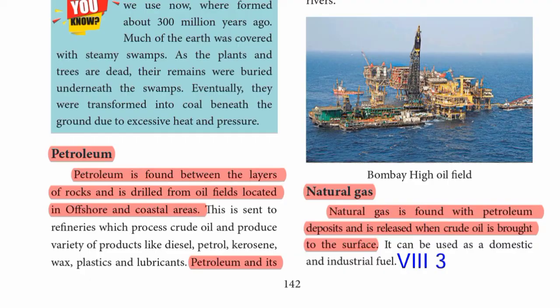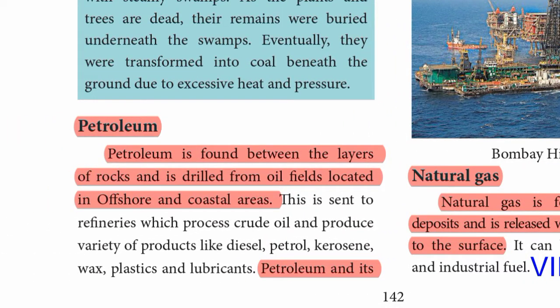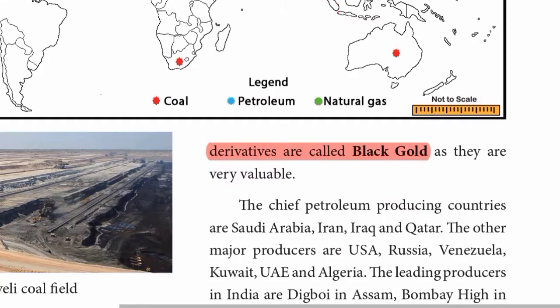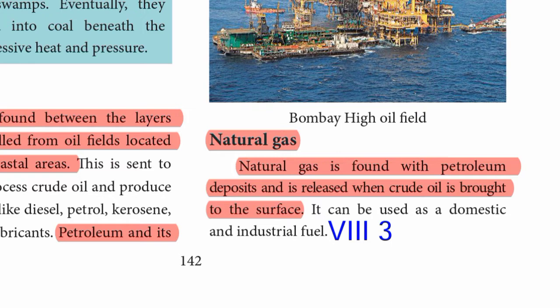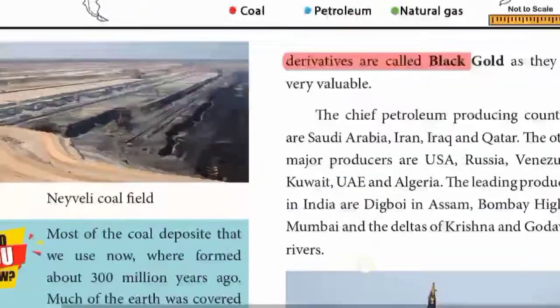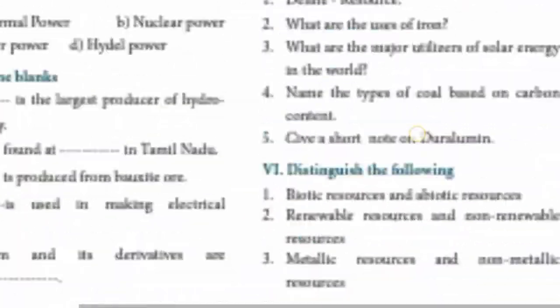Petroleum: petroleum is found between the layers of rocks and is drilled from oil fields located in offshore and coastal areas. Petroleum and its derivatives are called black gold. Natural gas: natural gas is found with petroleum deposits and is released when crude oil is brought to the surface. That completes Roman numeral 8, third detailed answer.